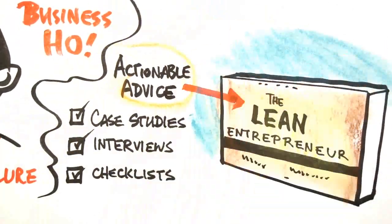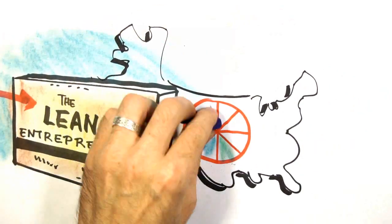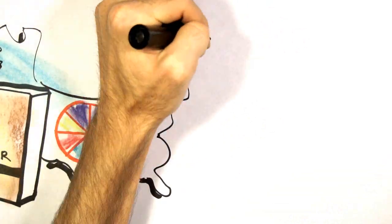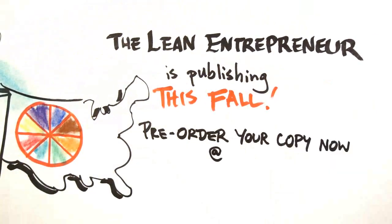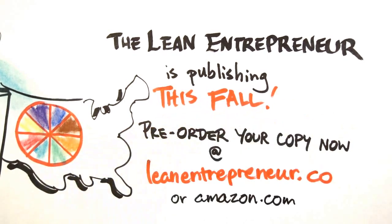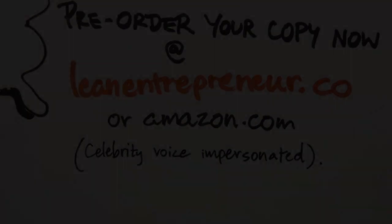Hey, if all the 2012 presidential nominees read the Lean Entrepreneur, we'd have an eight-way tie for president. The Lean Entrepreneur, coming this fall from Wiley Publishing. Pre-order now at leanentrepreneur.co.